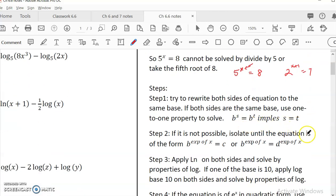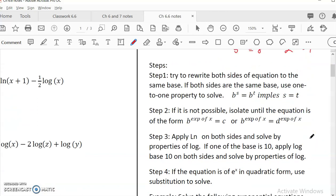So what are the approaches? There are four approaches. First is you try to see if you can rewrite both sides of the equation for the same base. If both of them can be written as the same base, then it implies that the two exponents must be the same. Or you can just say you can cancel the base if they're the same.